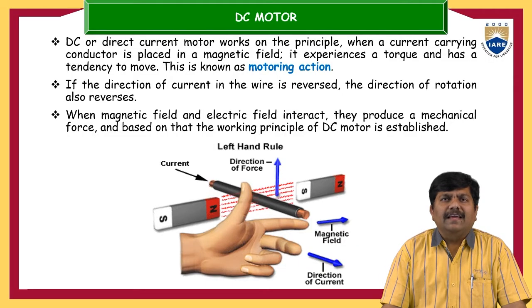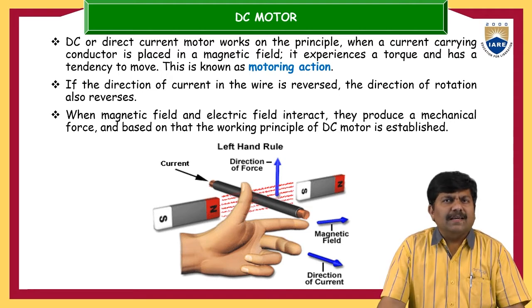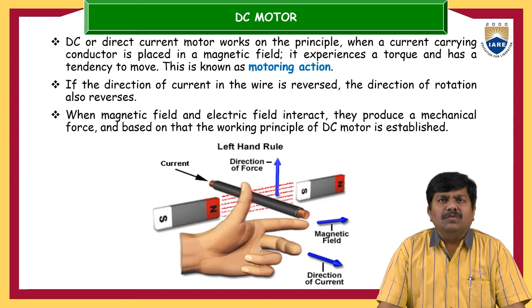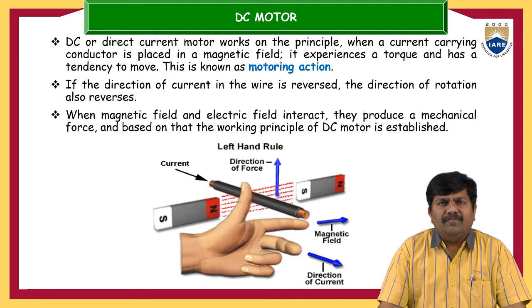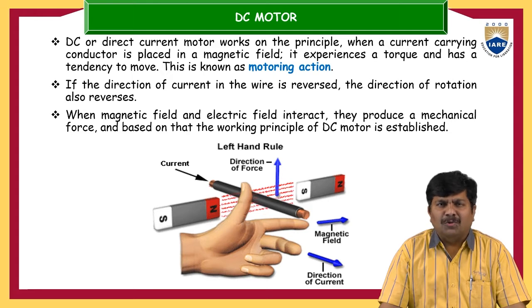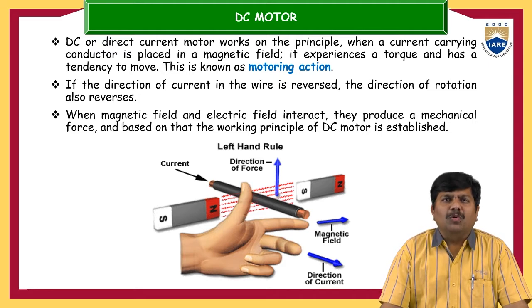First, everyone knows that every current-carrying conductor produces its own magnetic field. A DC motor is a transducer — it is an electric machine which converts electrical energy into mechanical energy. The electrical energy, which is the input source, will be applied to the armature of the DC motor. Whenever some amount of electrical current passes through the armature conductors, every current-carrying conductor produces its own magnetic field. As per Ampere's right-hand thumb rule, the direction of the magnetic field produced by a current-carrying conductor is influenced by the direction of the current.